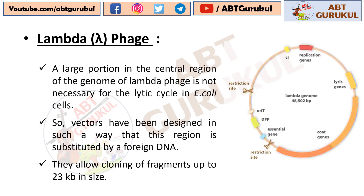A large portion in the central region of the genome of Lambda Phage is not necessary for the lytic cycle of the virus in E. coli cells. So vectors have been designed in such a way that this region is substituted by a foreign DNA. They allow cloning of fragments up to 23 Kb in size.